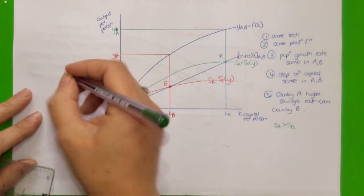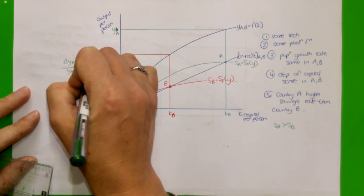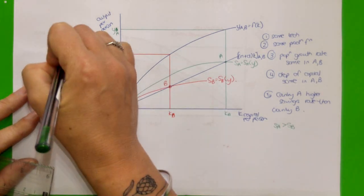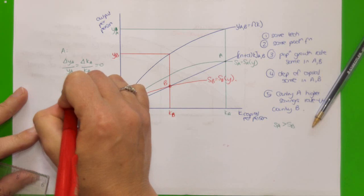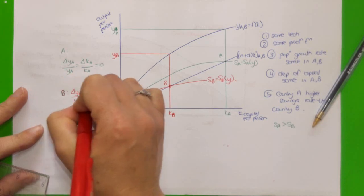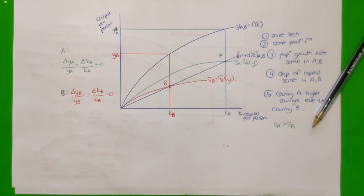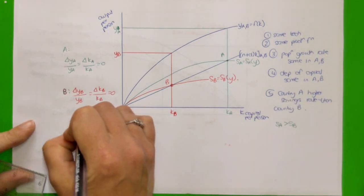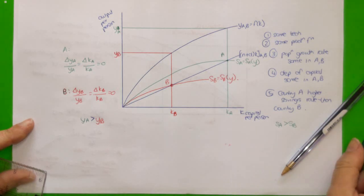Like before, we can say that ΔY_A/Y_A = ΔK_A/K_A = 0 for country A, and ΔY_B/Y_B = ΔK_B/K_B = 0 for country B. So in both countries, once they reach steady state, their output growth rates and capital per person growth rates are equal to zero. In steady state, we also know that output per person in country A is greater than output per person in country B, and capital per person is greater in country A than in country B.